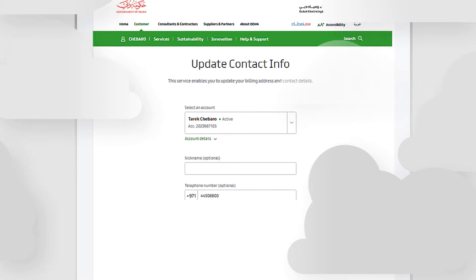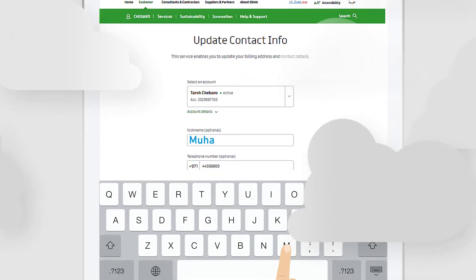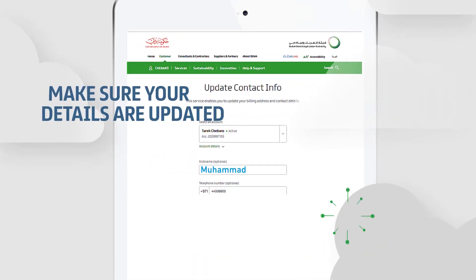Maybe you didn't receive your bill because your personal details may not be updated. If that's the case, update them through the website or smart app and your bill should arrive as scheduled.